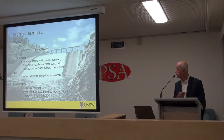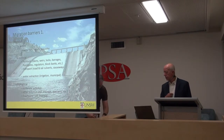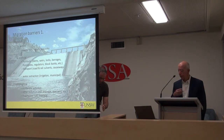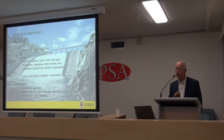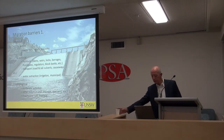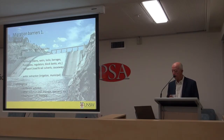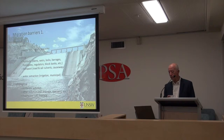Turning to the barriers that we put in the way of those migrations — there are natural ones like waterfalls, rapids and cascades, and then there are all the artificial ones such as hydraulic barriers, dams and weirs. There are also barriers created for transport — road crossings, railway crossings and so on.